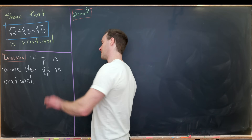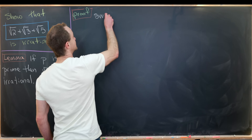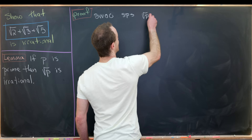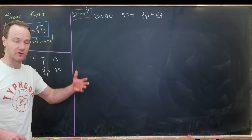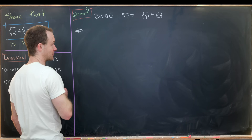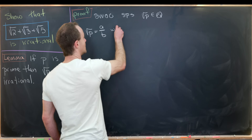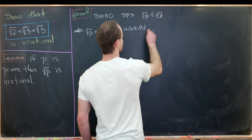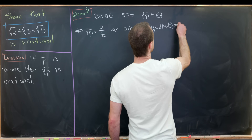Let's do the proof here. This is a classic proof by way of contradiction. So by way of contradiction, let's suppose that the square root of p is a rational number. If it's not irrational, then it is rational. By the definition of rational numbers, that means the square root of p is equal to a over b, where a and b are natural numbers with the GCD of a and b equal to 1.